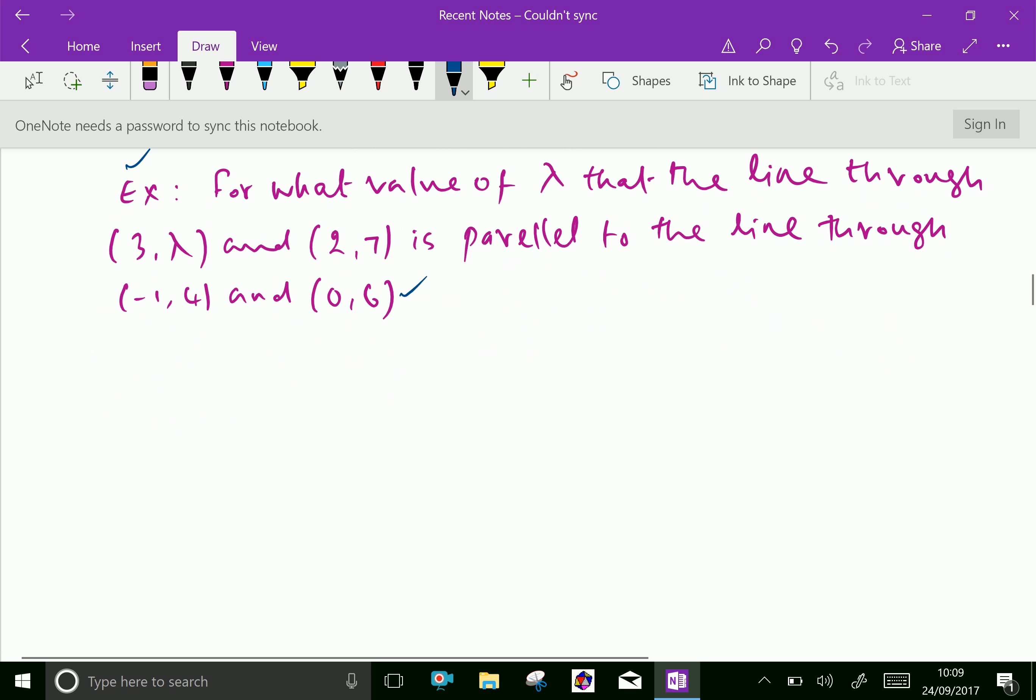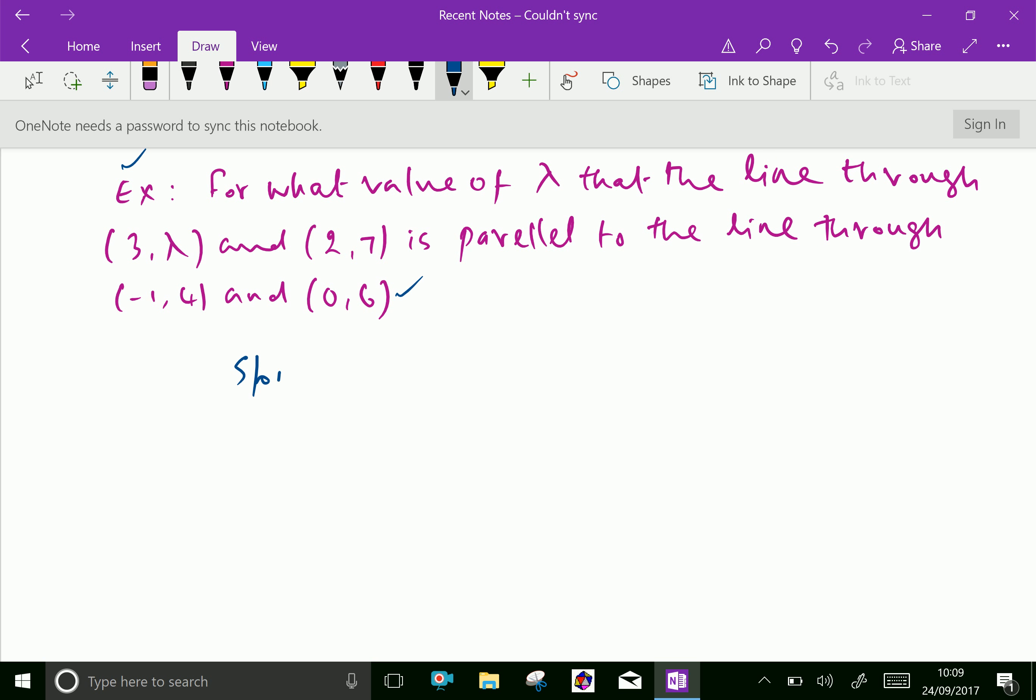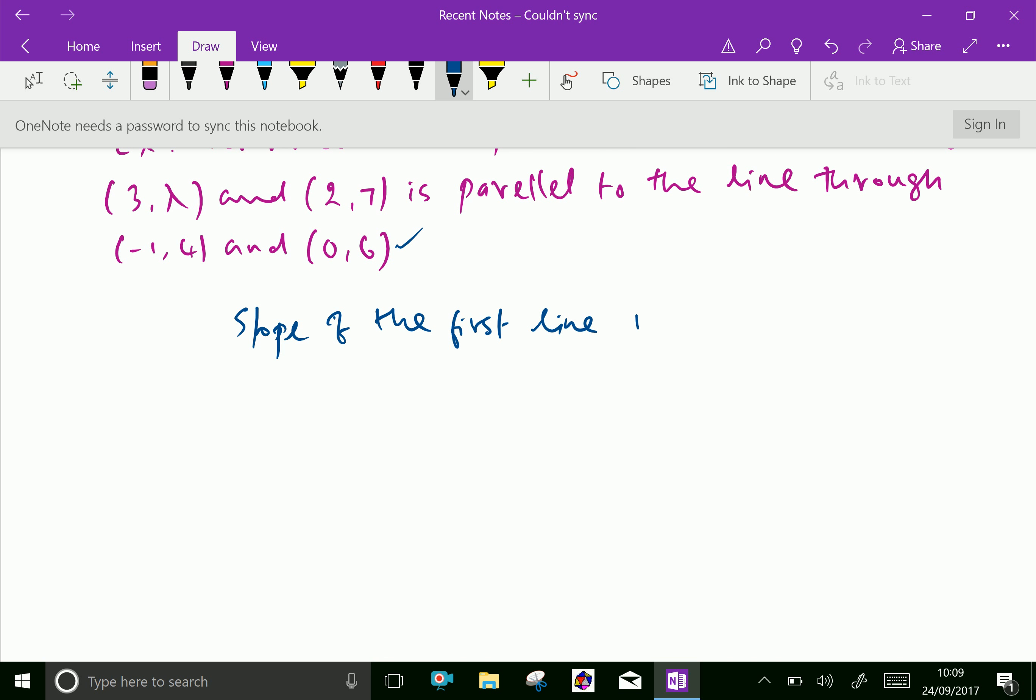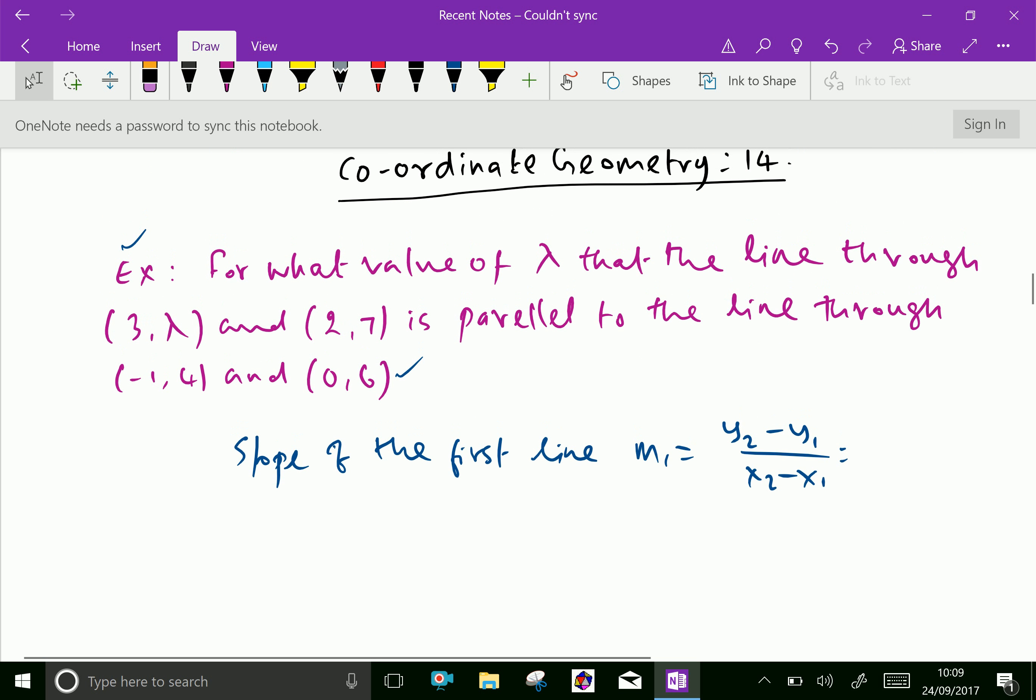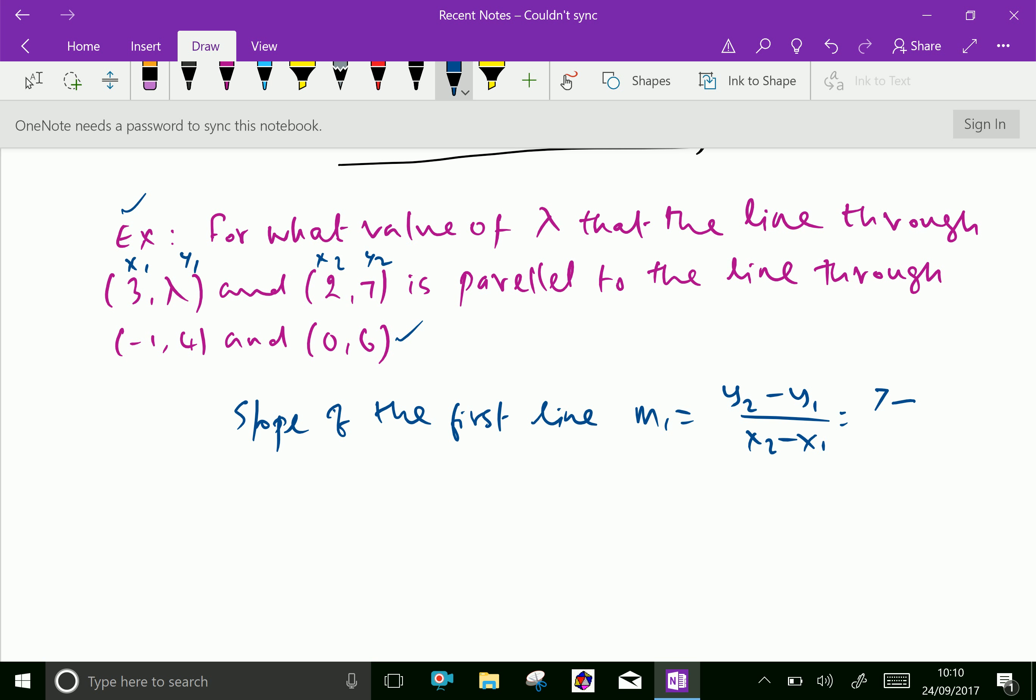Slope of the first line m1 equals y2 minus y1 over x2 minus x1. This is x1, y1 and x2, y2, so m1 equals 7 minus lambda over 2 minus 3.